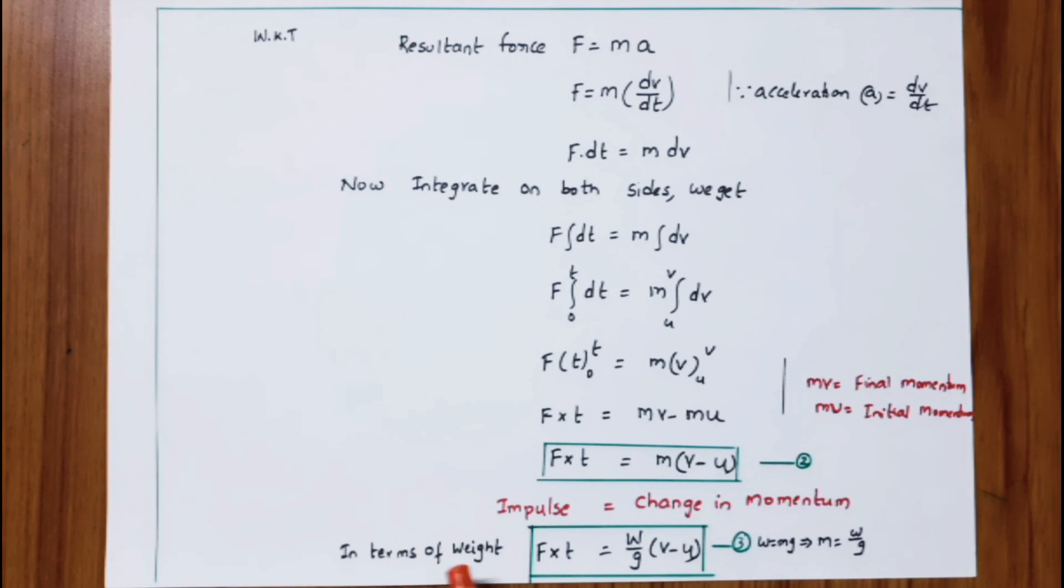Finally, impulse equals change in momentum. In terms of weight, F × t = (w/g) × (v - u). This is equation number three. Since w = mg, we get m = w/g.